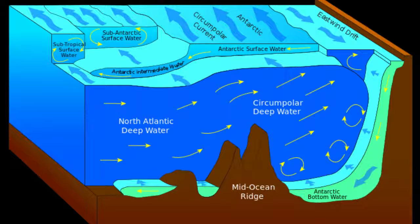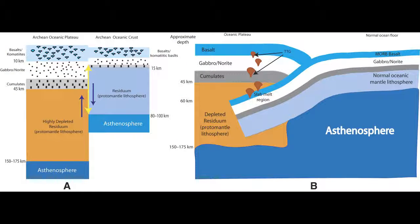Oceanic crust has a smaller amount of silicon — mafic rock. Igneous oceanic plateaus have a ratio intermediate between continental and oceanic crust, although they are more mafic than felsic.